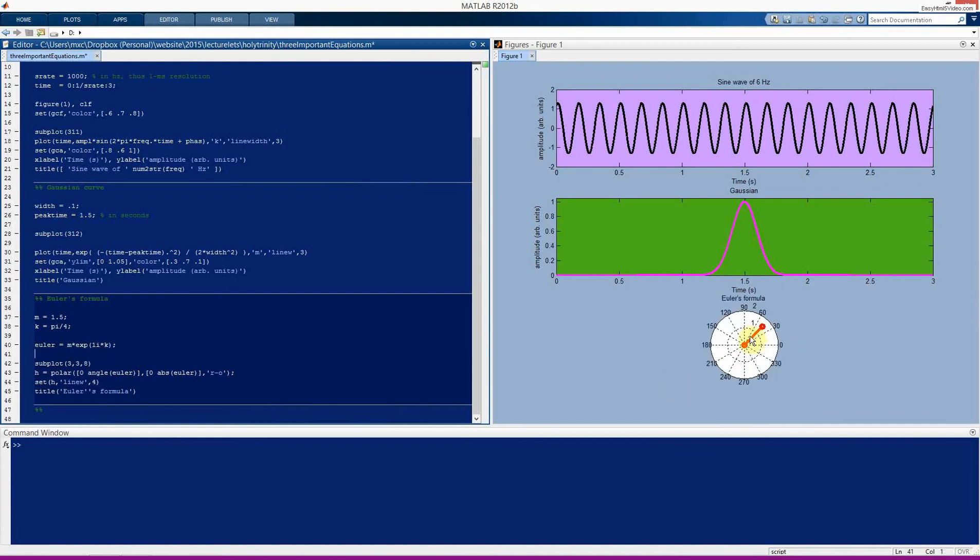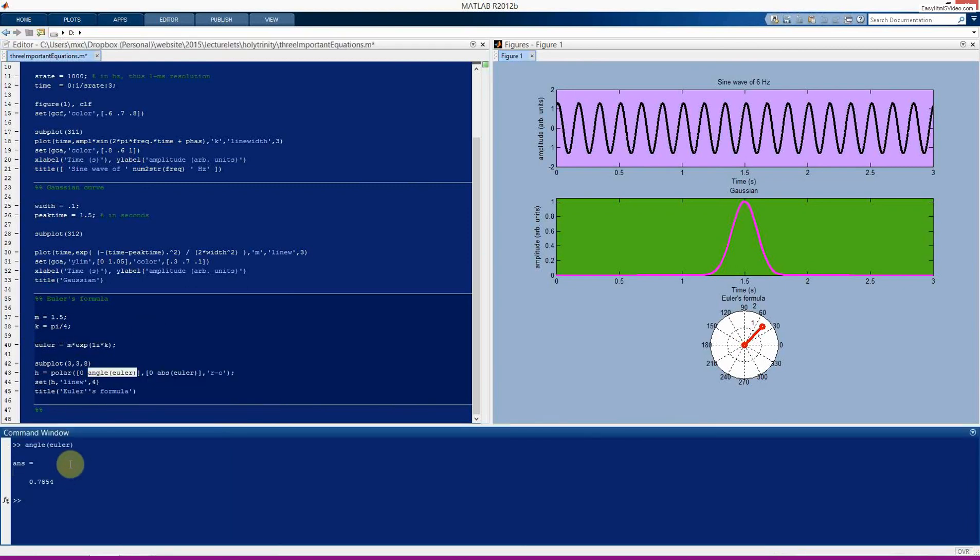So m e to the i k gets implemented in MATLAB as m exp i k or 1 i k. And here you see this in a polar representation. To be honest, this step was really not necessary because when we extract the angle from the result of Euler's formula, that actually is just our variable k, which I defined here.